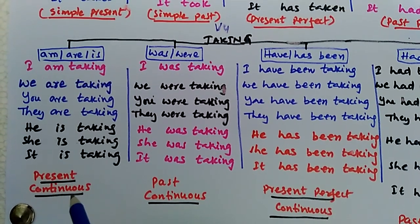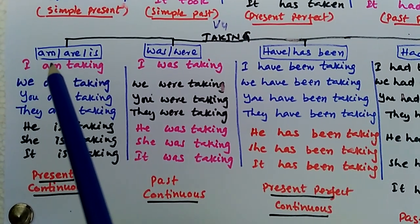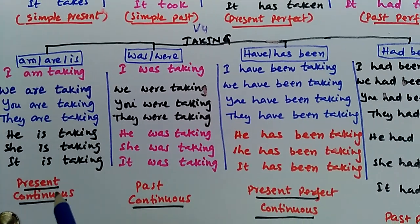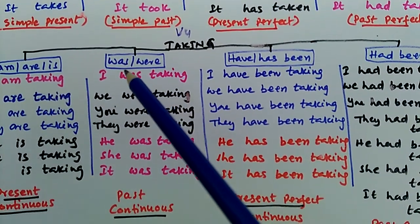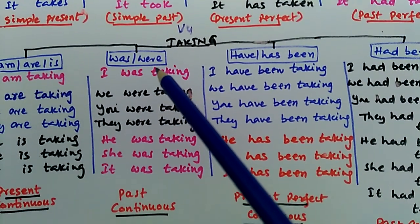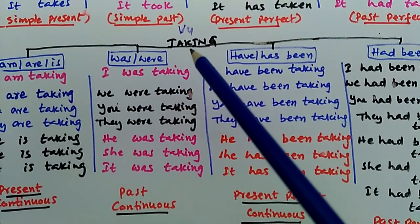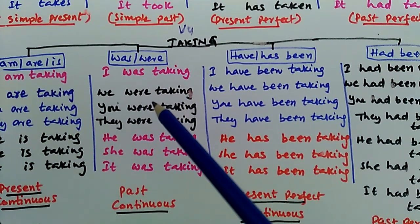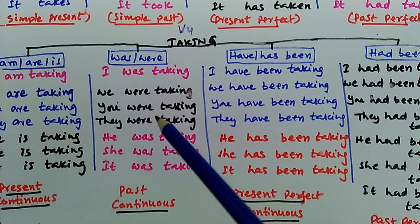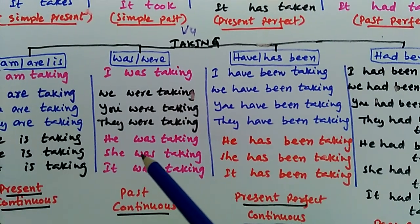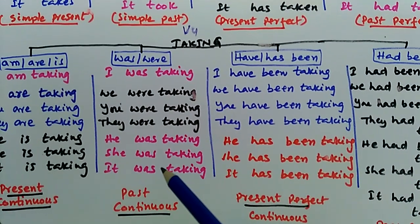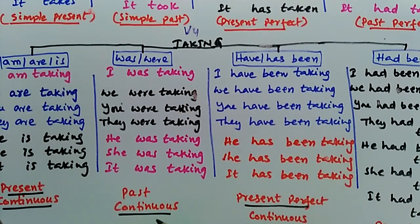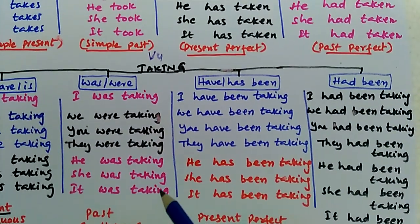Continuous means the 'ing' form. So when we make use of am, are, or is, this is called present continuous. And the next table — adding was or were to verb four — we get: I was taking, we were taking, you were taking, they were taking, he was taking, she was taking, it was taking. This table is called past continuous.